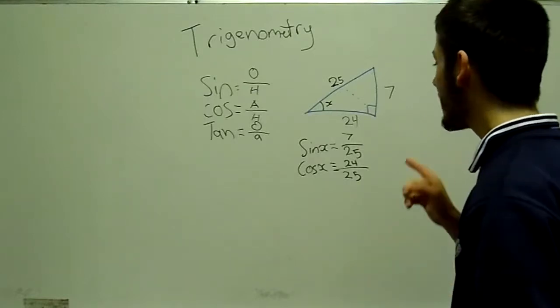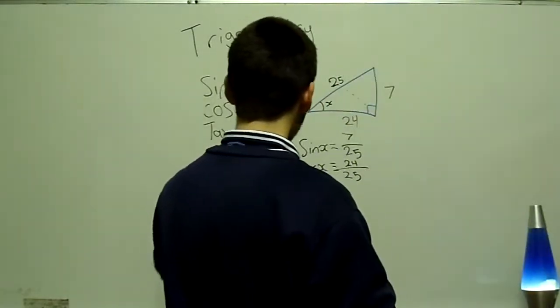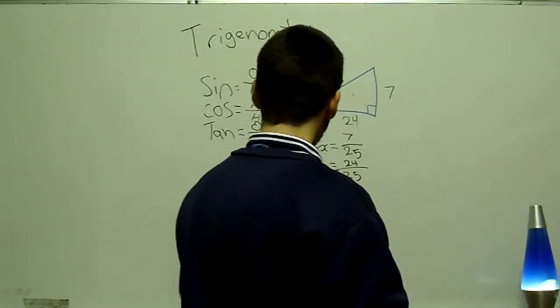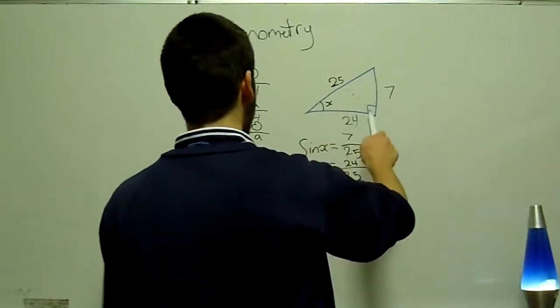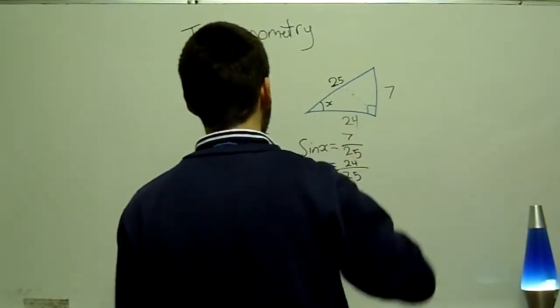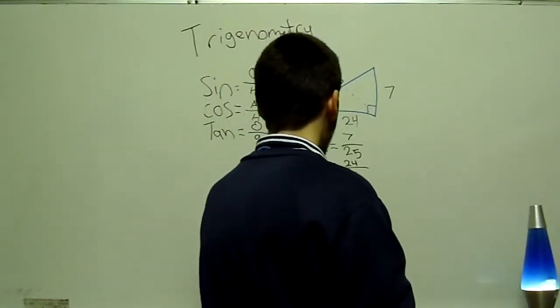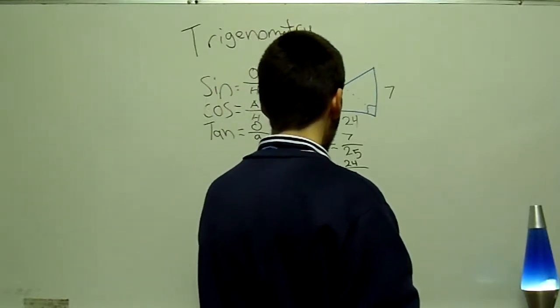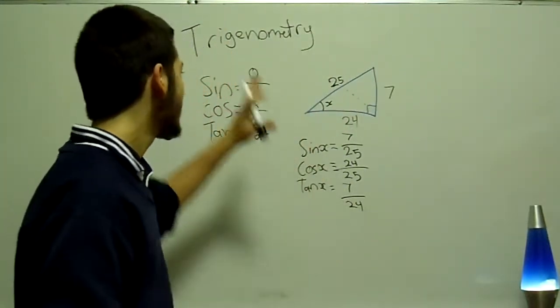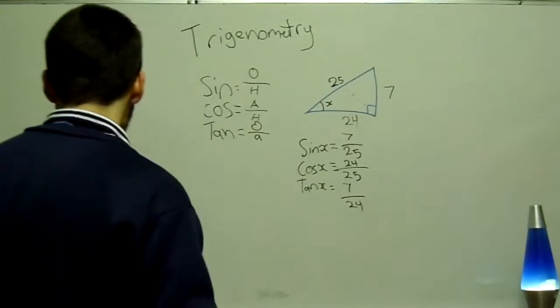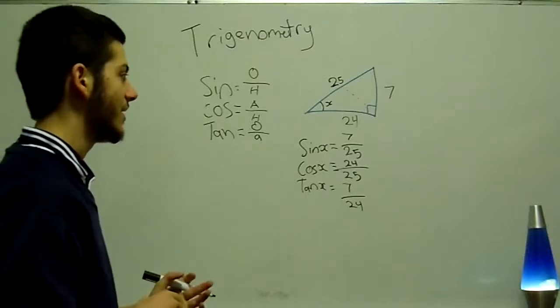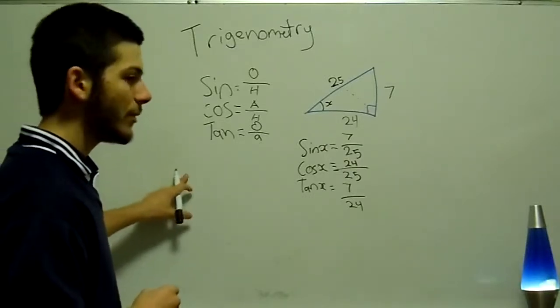There we go. Now we've got our last one, which is tan, which is going to be opposite over adjacent. So tan x is equal to the opposite, 7, and the adjacent, which is going to be 24. So we put 7 over 24. And that's basically how it works. It's the fundamentals of trigonometry. Then we get on to more complex versions of this. So these are the basic building blocks.